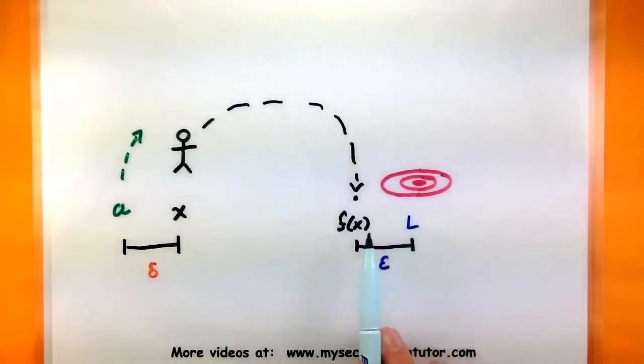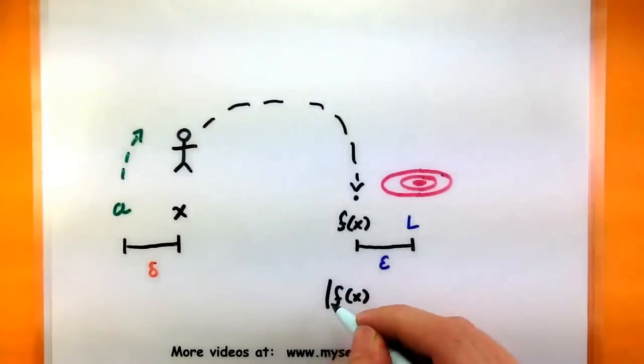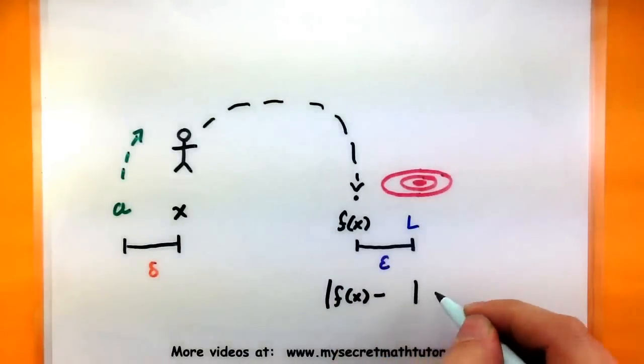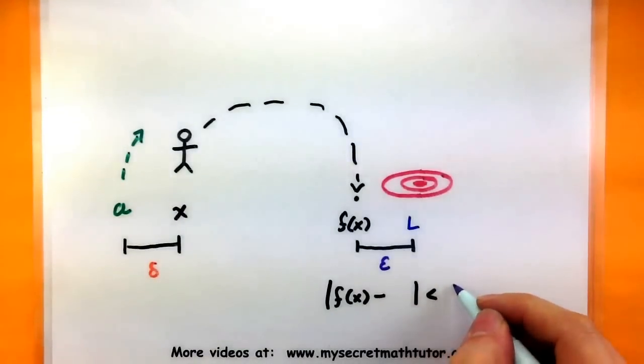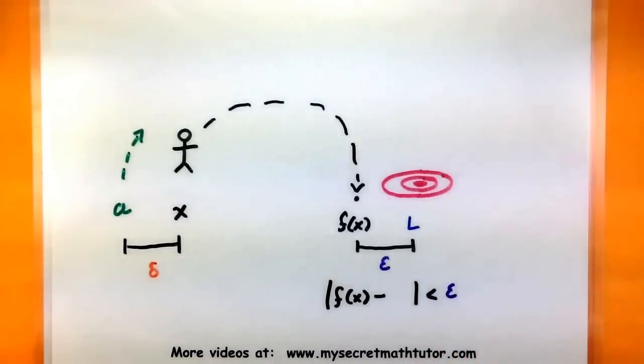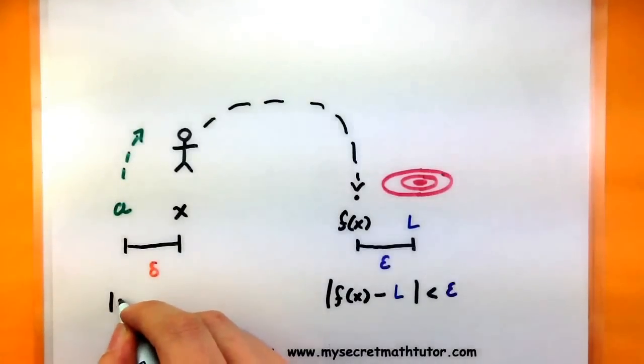So one thing that we can connect is this distance between our function and the limit. Since absolute values can be thought of as a distance, that's what this part of the definition is trying to say. If you're looking at your distance between the function and L, we want to make sure that it's within some sort of epsilon threshold. And that if we want our function to satisfy this, then it really matters how we choose our x's.